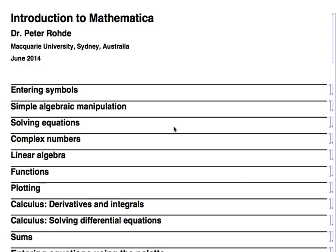Lots of you will be familiar with languages like MATLAB and Python and C, and all of these are numerical packages. They solve equations in terms of numerical answers, whereas Mathematica is symbolic, which is known as a computer algebra system. Rather than evaluating expressions to give you a number, it'll evaluate expressions to give you an algebraic symbolic answer.